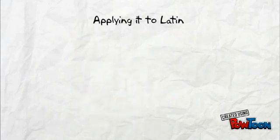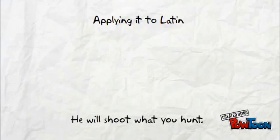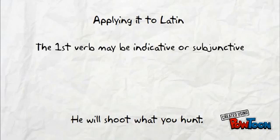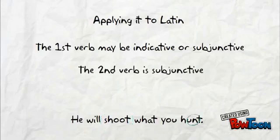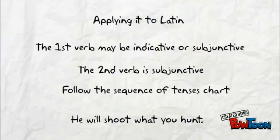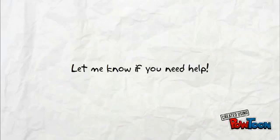If we are applying this further to Latin, using the 'he will shoot what you hunt' example, the main things to remember are these. First, the first verb may be indicative or subjunctive — it is independent of the second verb. Next, the second verb is subjunctive, just like the chart says. Finally, if you follow the chart for the sequence of tenses, you will have more success in translating Latin. Let me know if you need further help understanding the sequence of tenses.